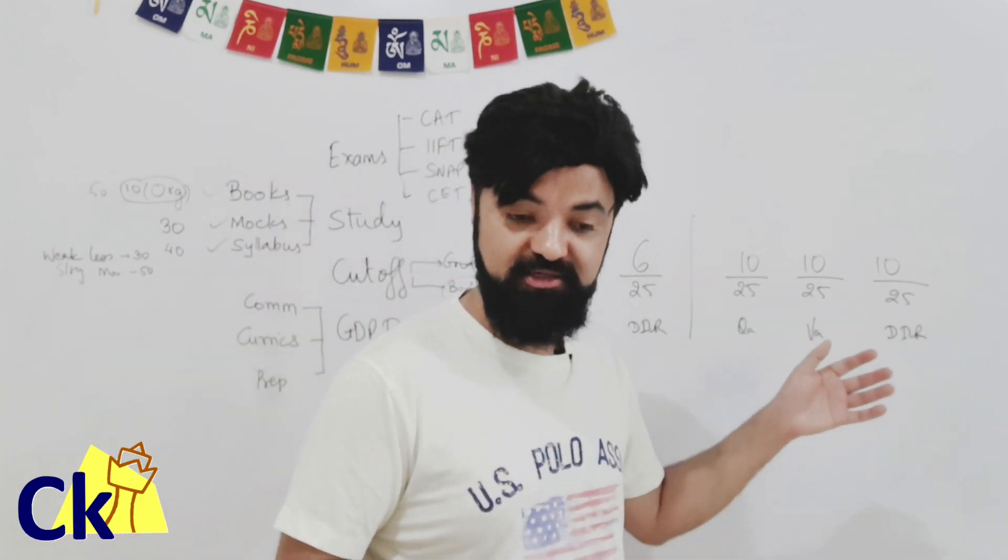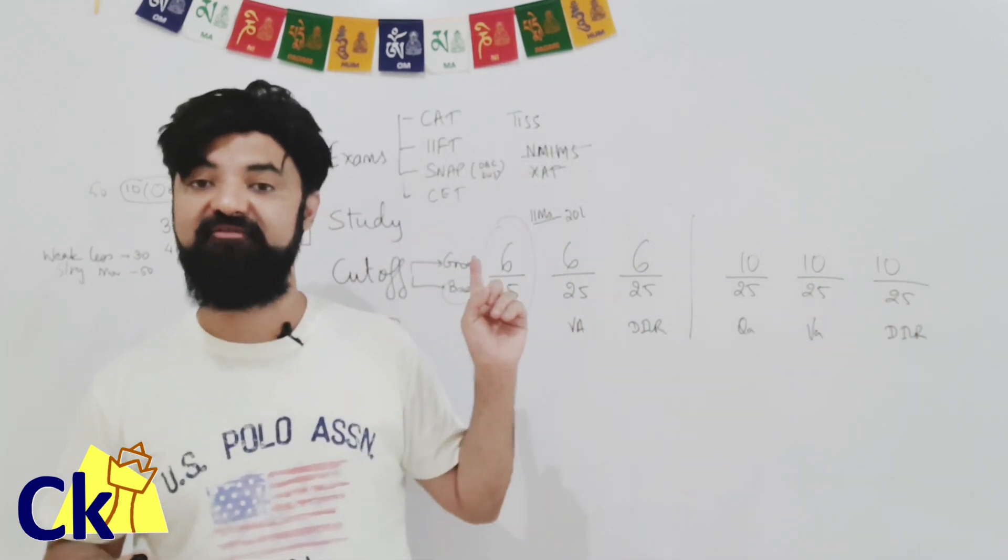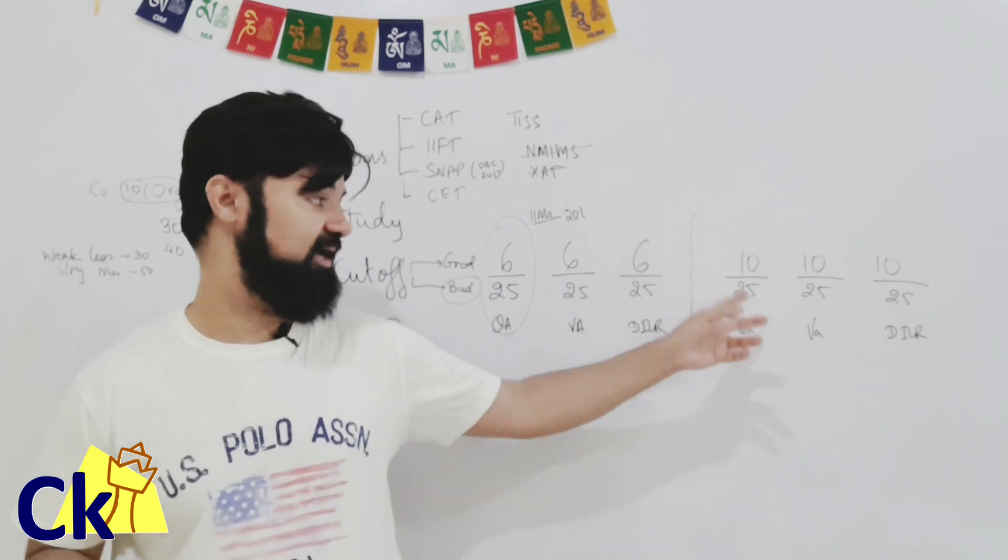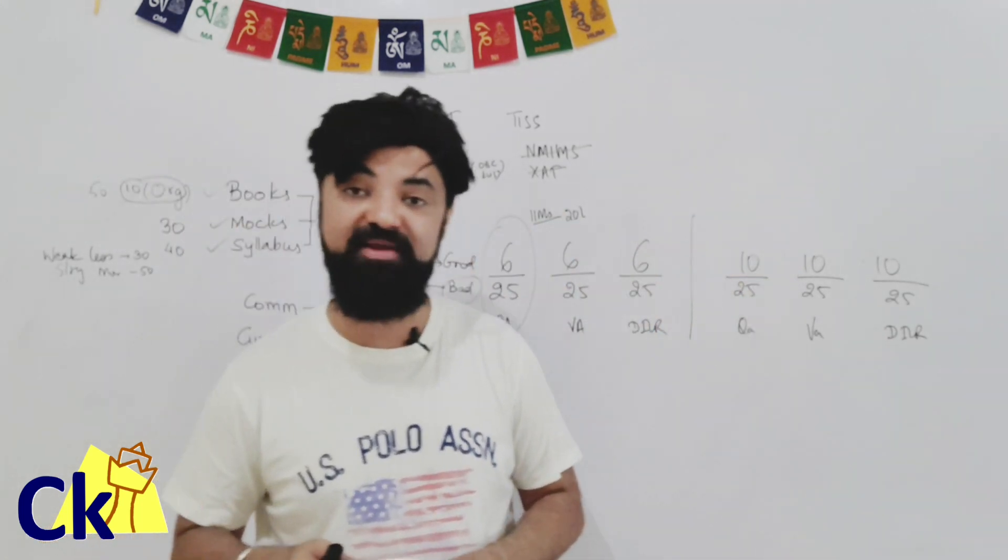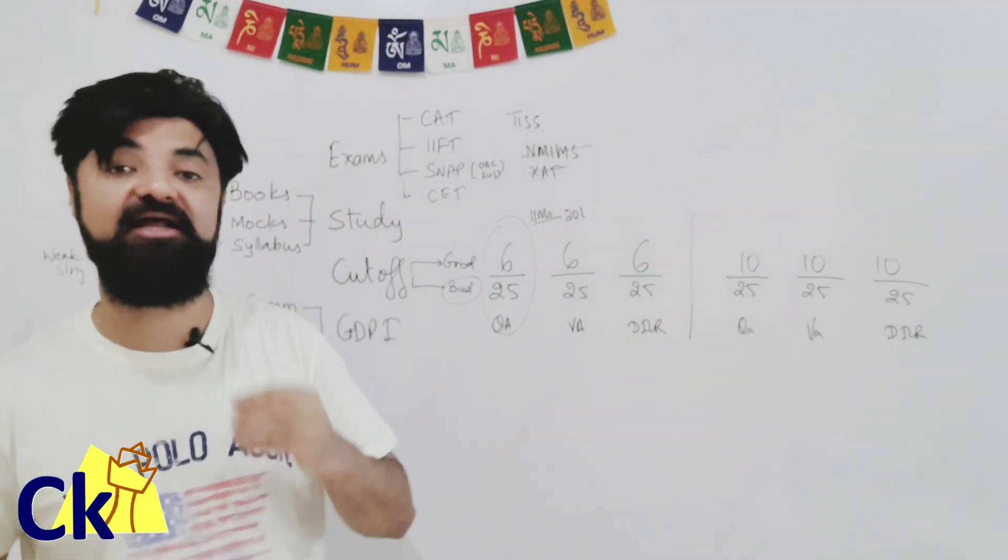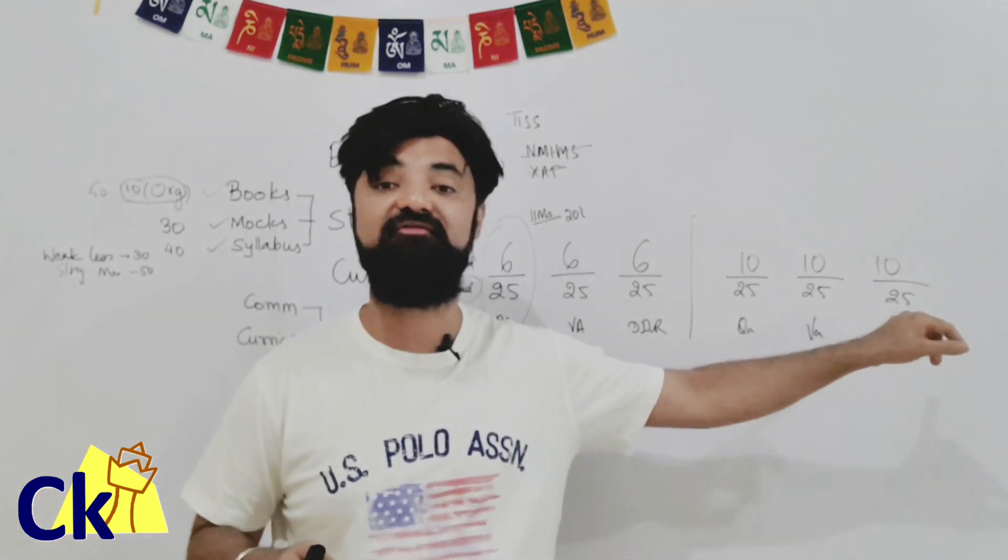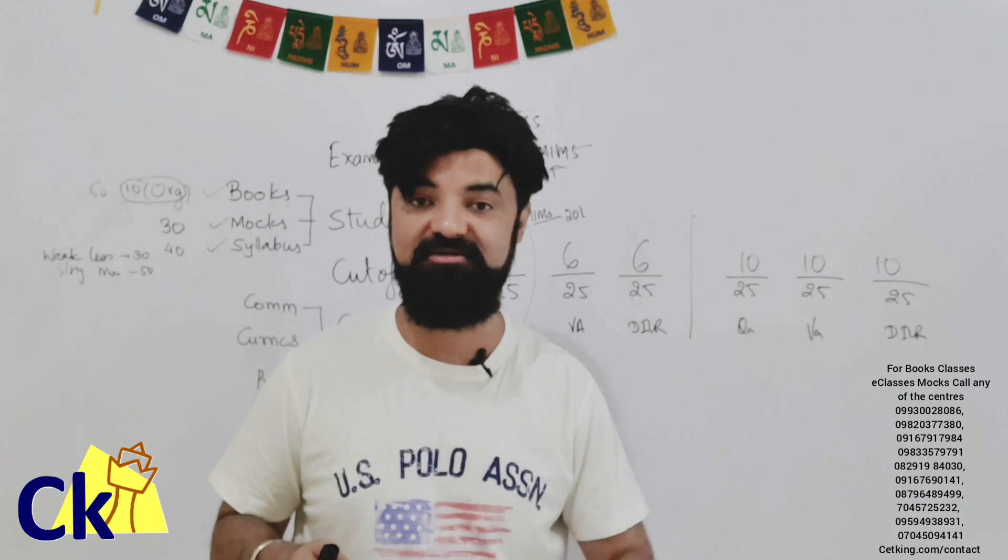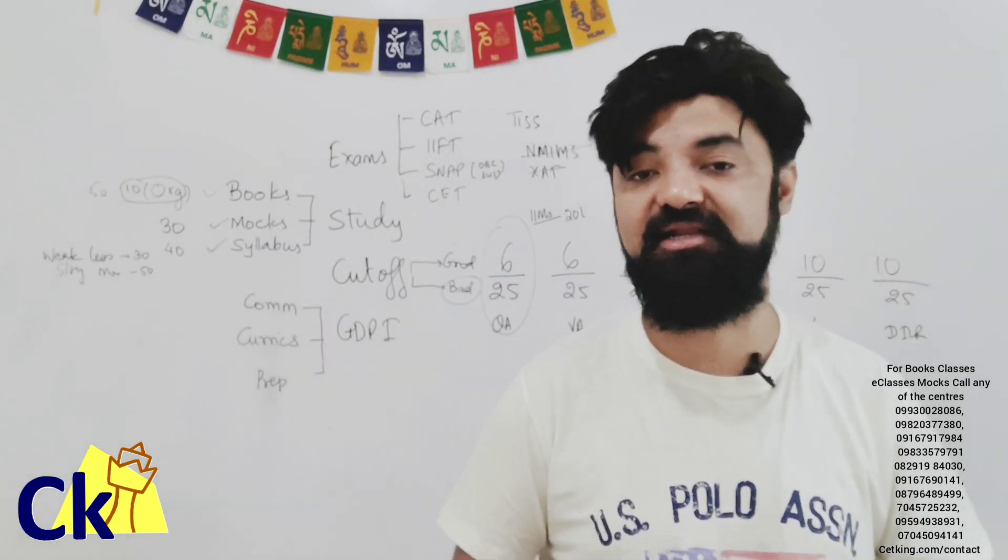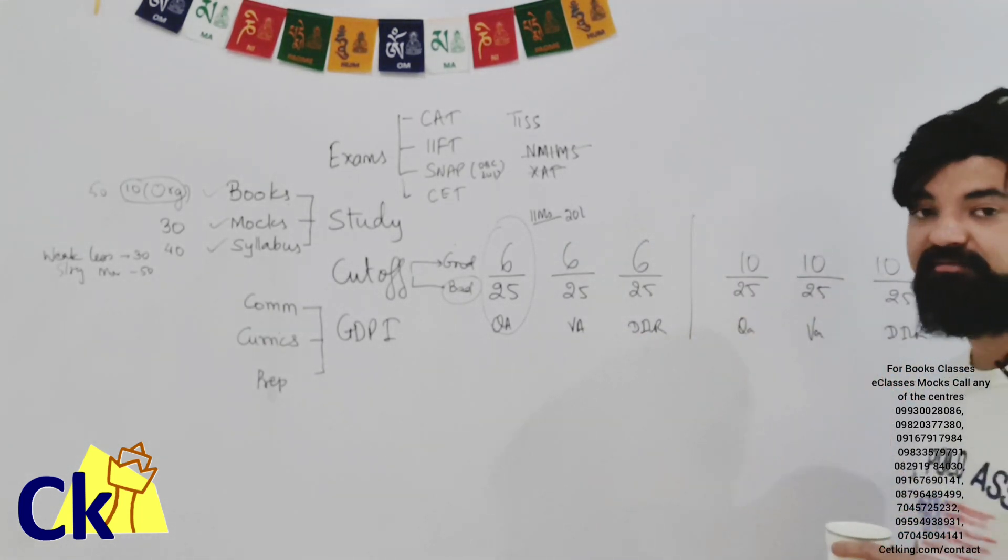But again, it depends upon your 10th, 12th marks. It depends upon your gender as well. There are a lot of ifs and buts. But if you touch six, six, six, guaranteed IIM call. Baby IIMs at least. And 10, 10, 10, you will be getting a few main IIM calls. Do whatever you want to do on top of this. You get 15, 15, you get 25, I will be more than happy. I will love to take an interview if you are doing 25, 25, 25% correct in each section. But this is the bare minimum target.